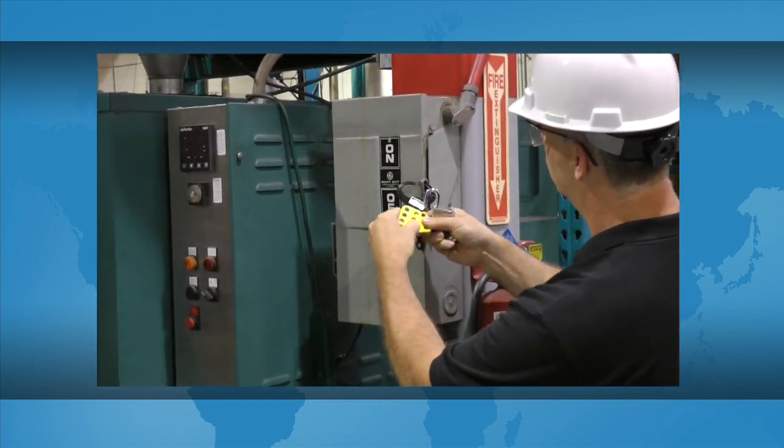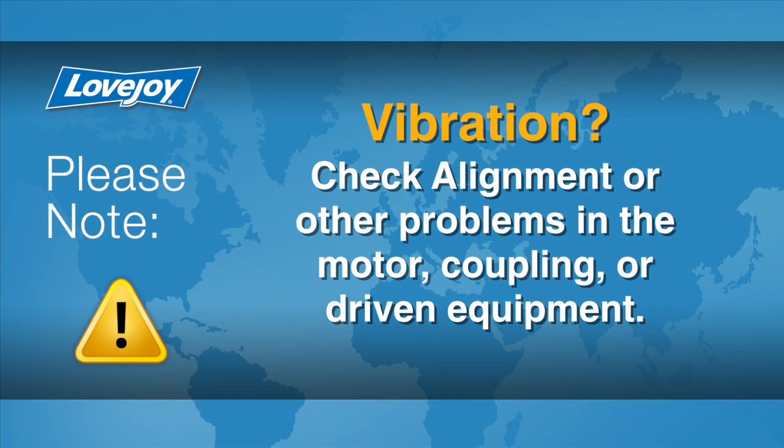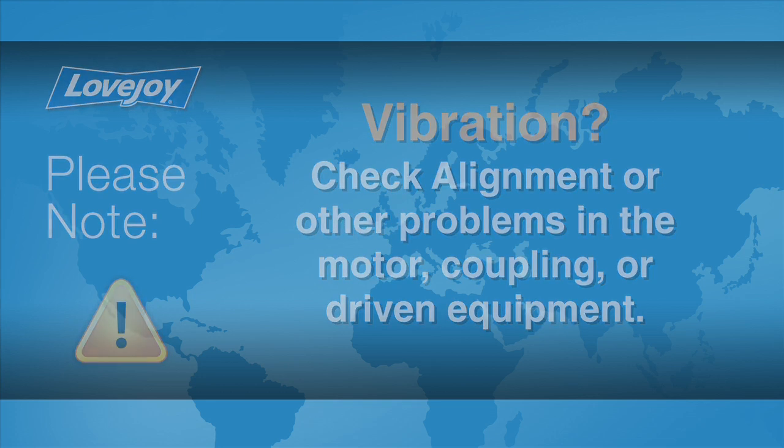The equipment can then be started up and tested. The coupling and equipment should run smoothly. If vibration is detected, it could indicate that there is an issue with alignment or other problems. These could exist in the motor, coupling, or driven equipment and should be resolved prior to placing this coupling into operation.